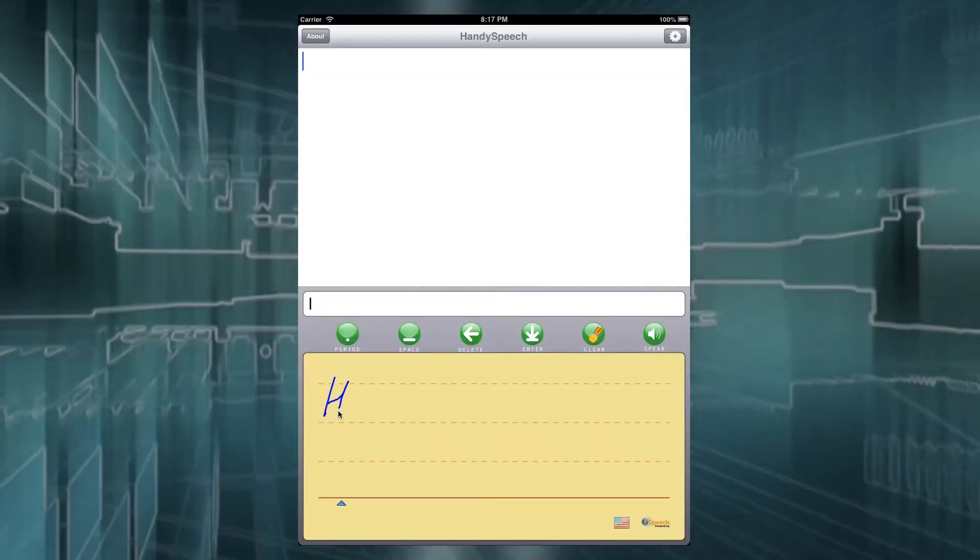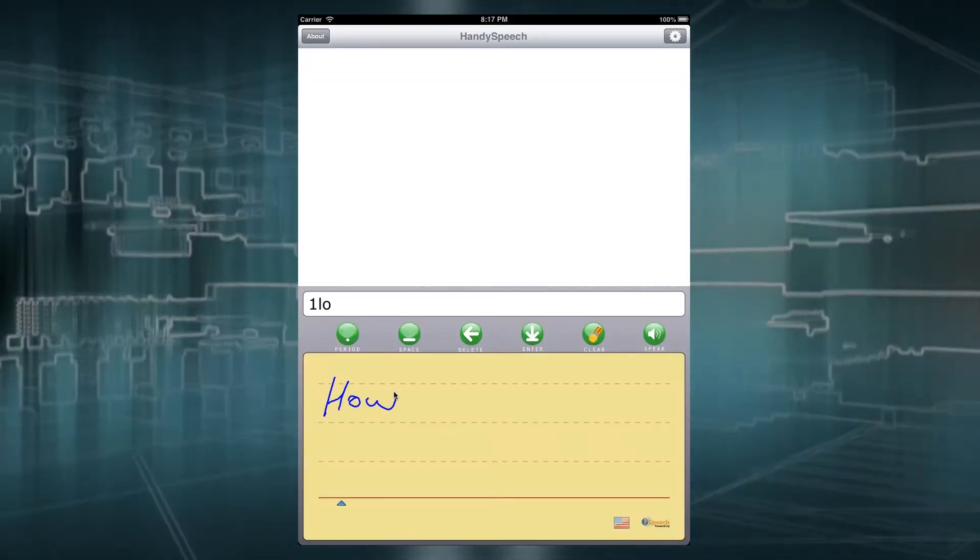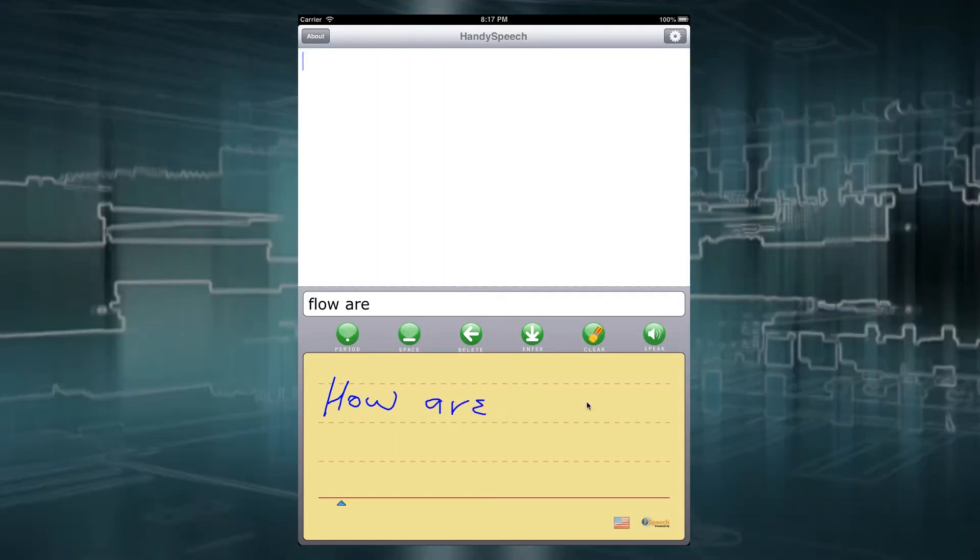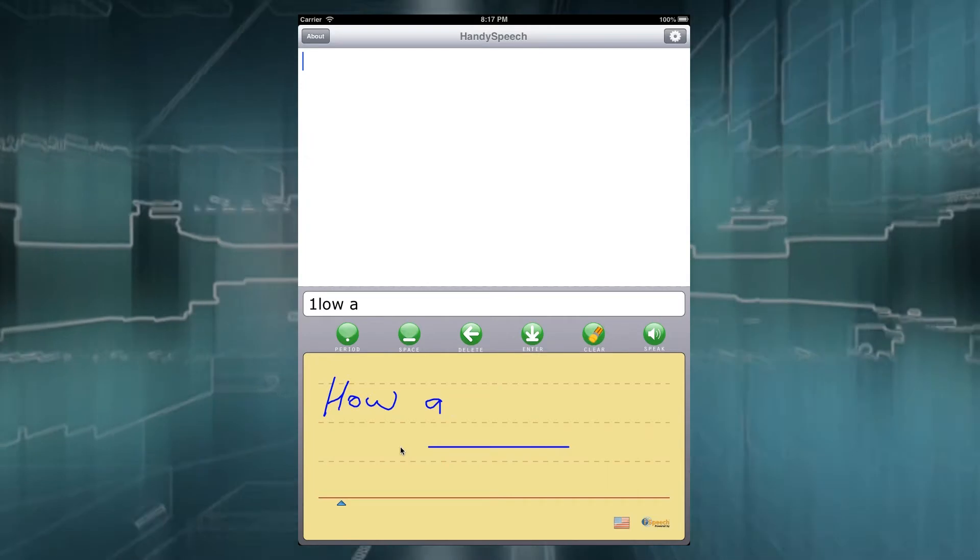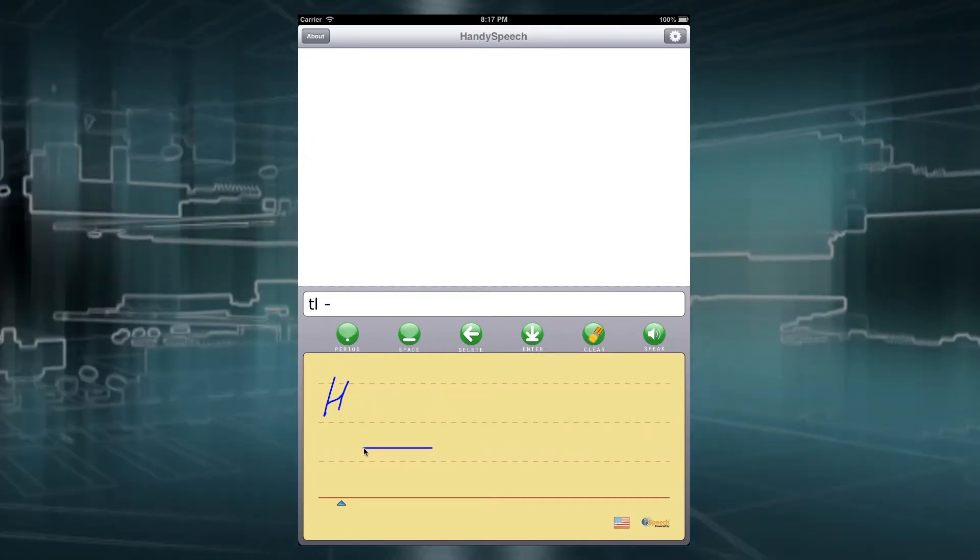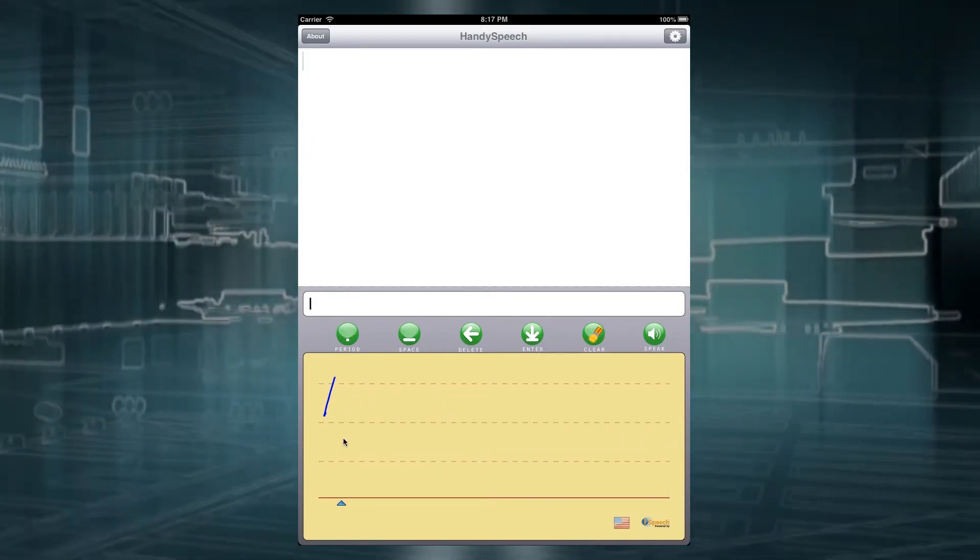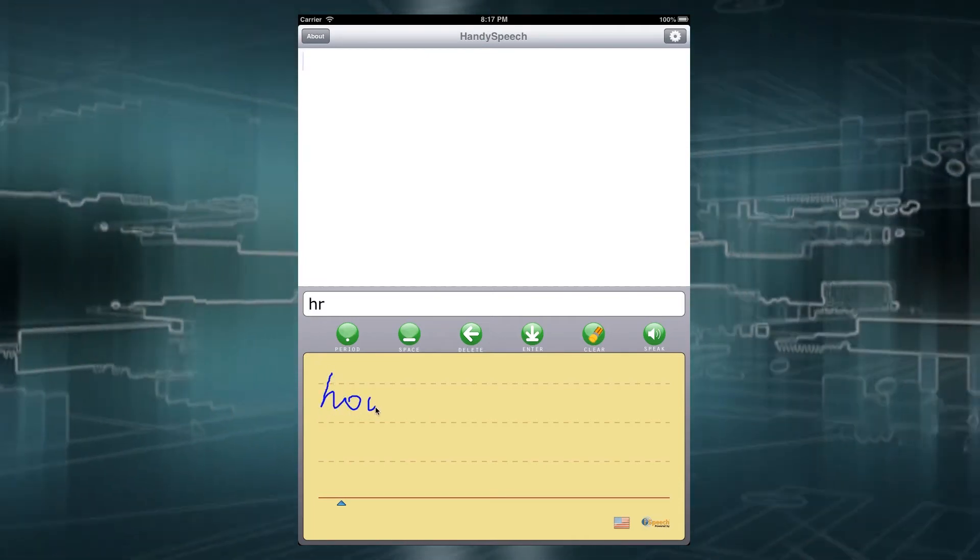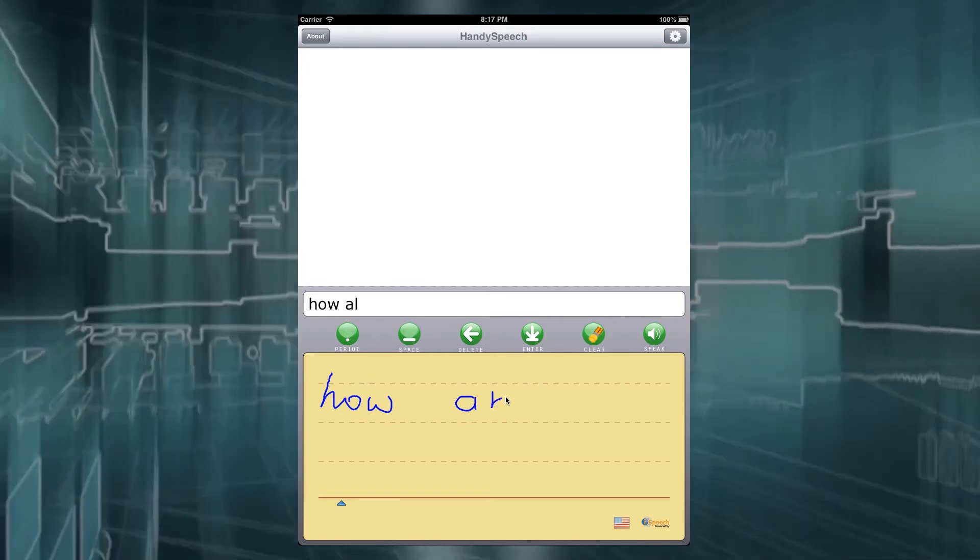Use the Backspace gesture to delete the last stroke. Also, you can touch the Delete button instead. Insert a carriage return, equivalent to pressing Enter, by using the Return gesture.